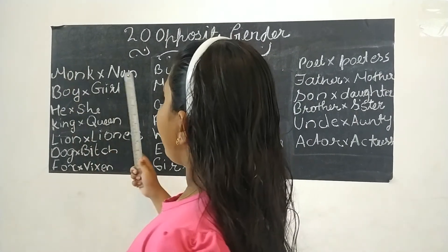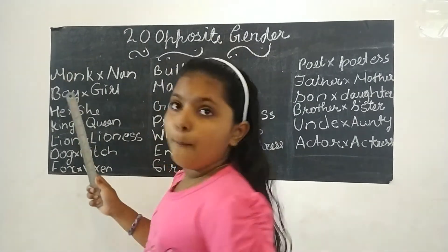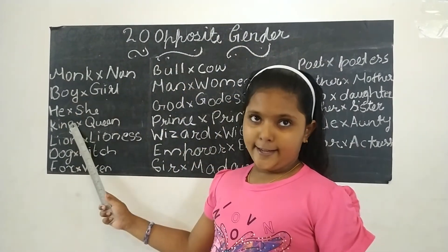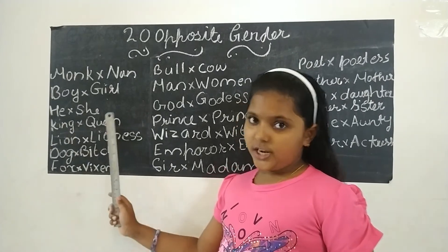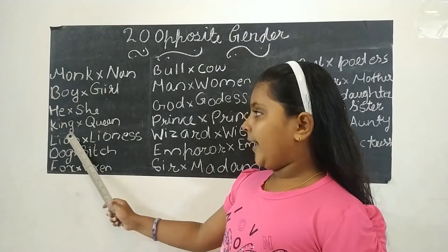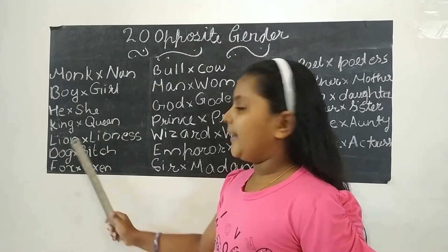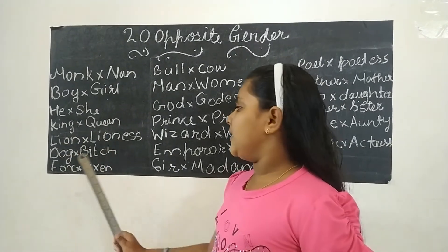Monk, nun. Boy, girl. He, ewe. King, queen. Lion, lioness.